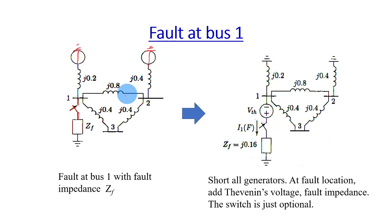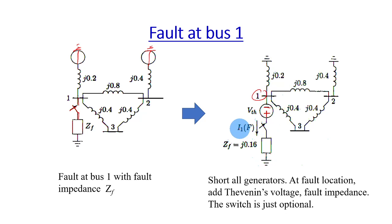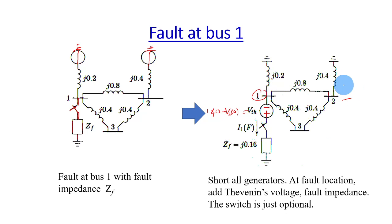You can use the same impedance that we have calculated before in per unit. Other than shorting out all the voltage sources, you need to add a Thevenin voltage at the location of the fault. Because now the fault occurred at bus number 1, you add this Thevenin voltage here — negative on the top, negative on the bottom, facing toward the ground — and you label the fault current accordingly. From this figure, you can see that the Thevenin voltage is equal to the voltage at bus 1 before the fault, which is assumed as 1 at angle 0.